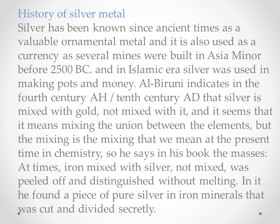History of silver metal: Silver has been known since ancient times as an ornamental metal and was also used as currency. Several mines were built in Asia Minor before 2500 BC. In the Islamic era, silver was used in making pots and money. Al-Biruni indicates in the 10th century that silver is mixed with gold, and it seems he means the union between the elements rather than mixing as we understand it in chemistry today.